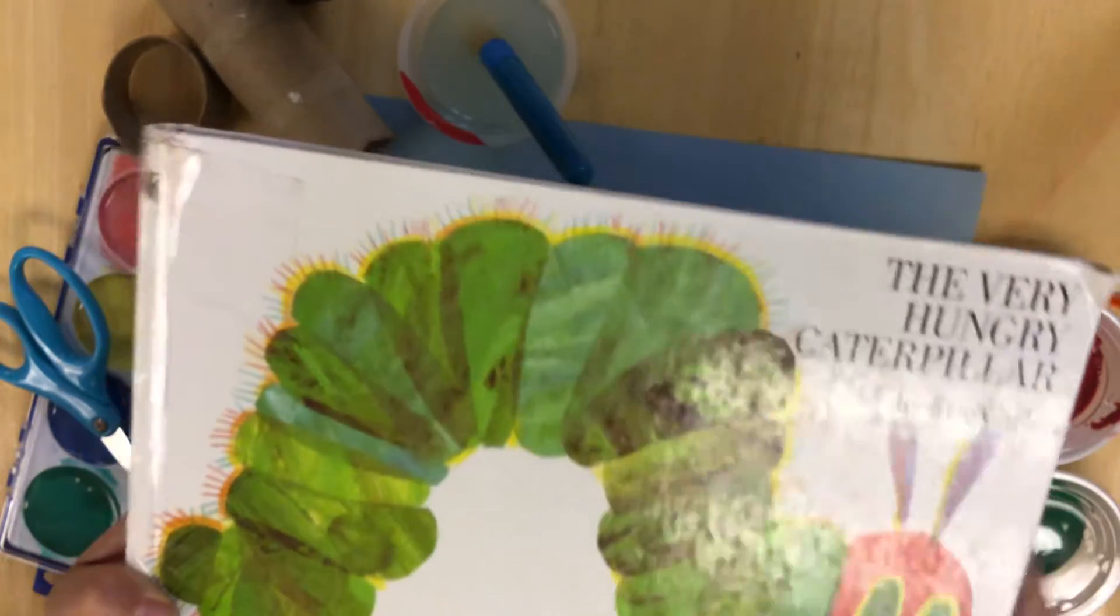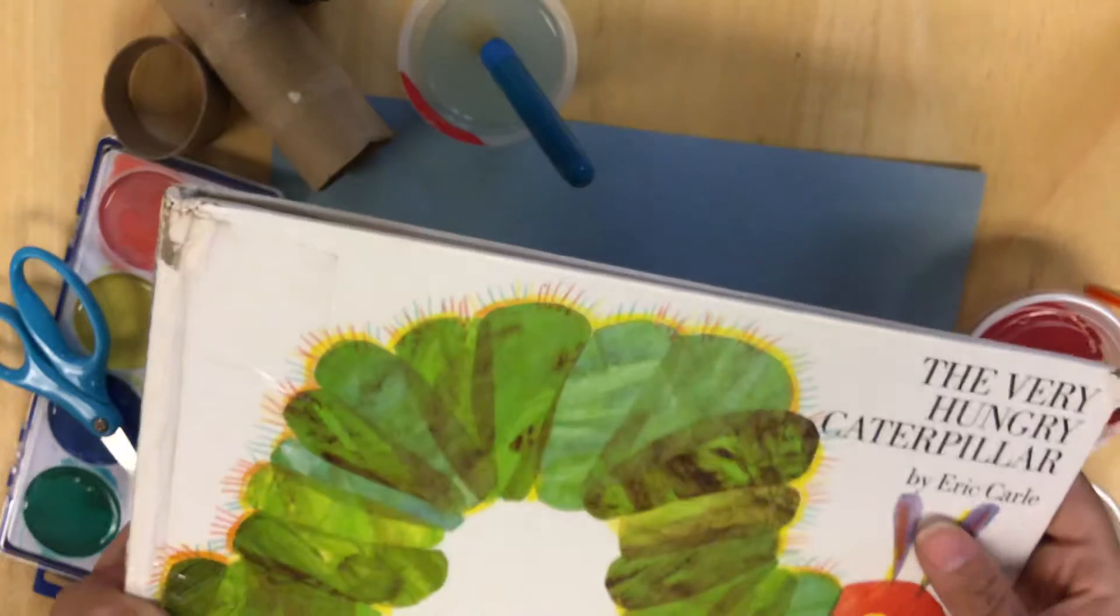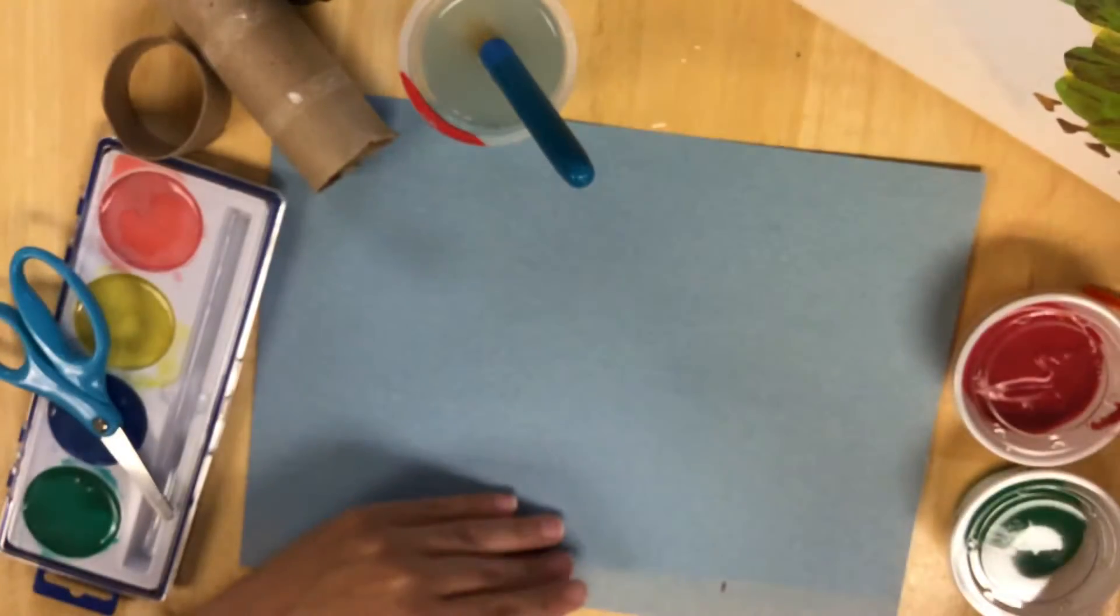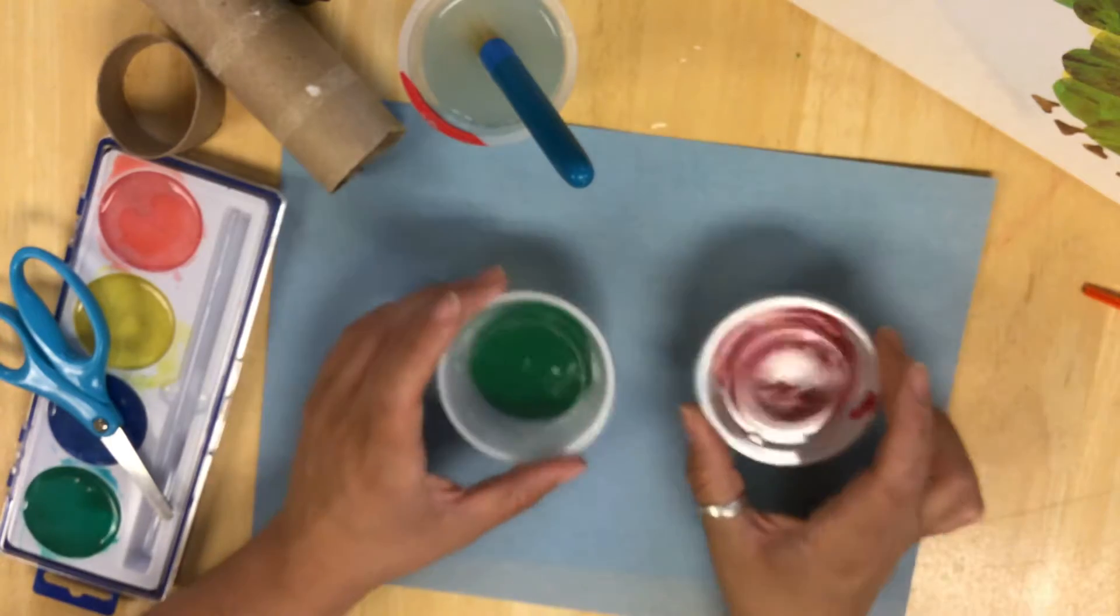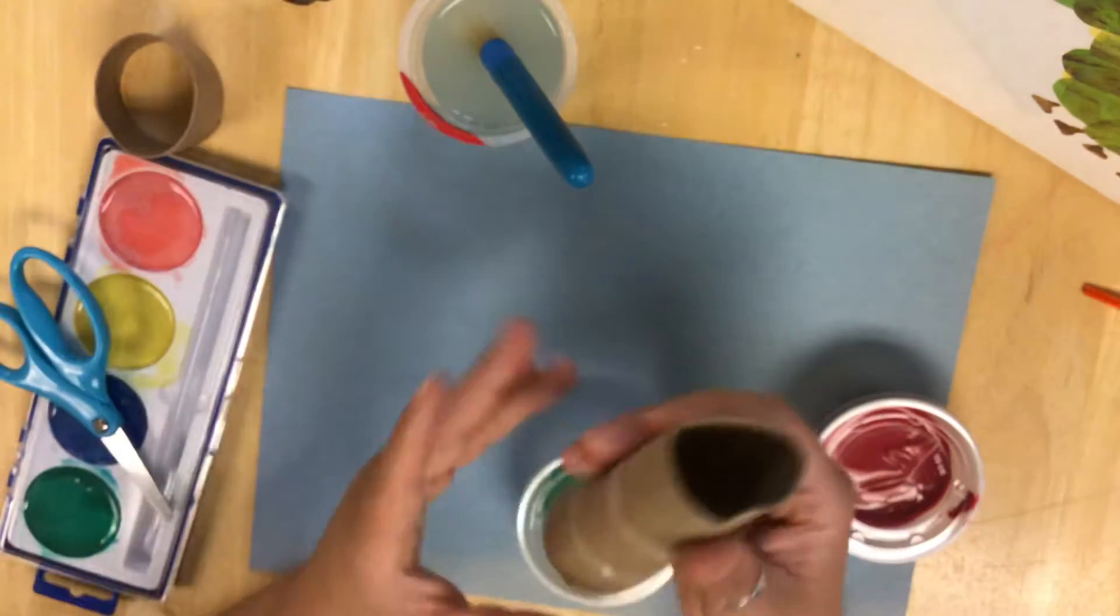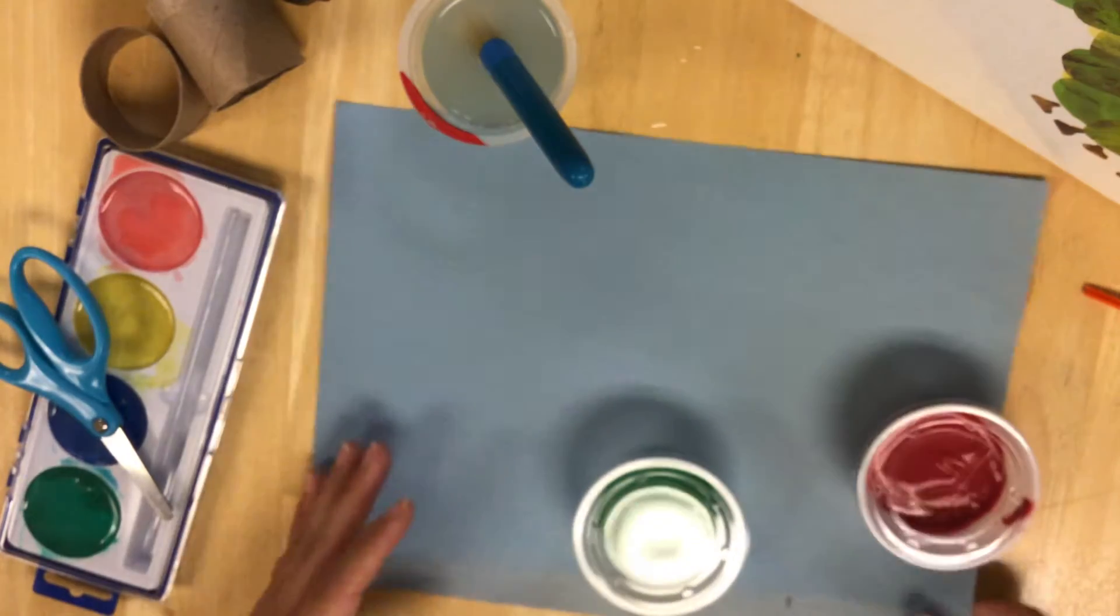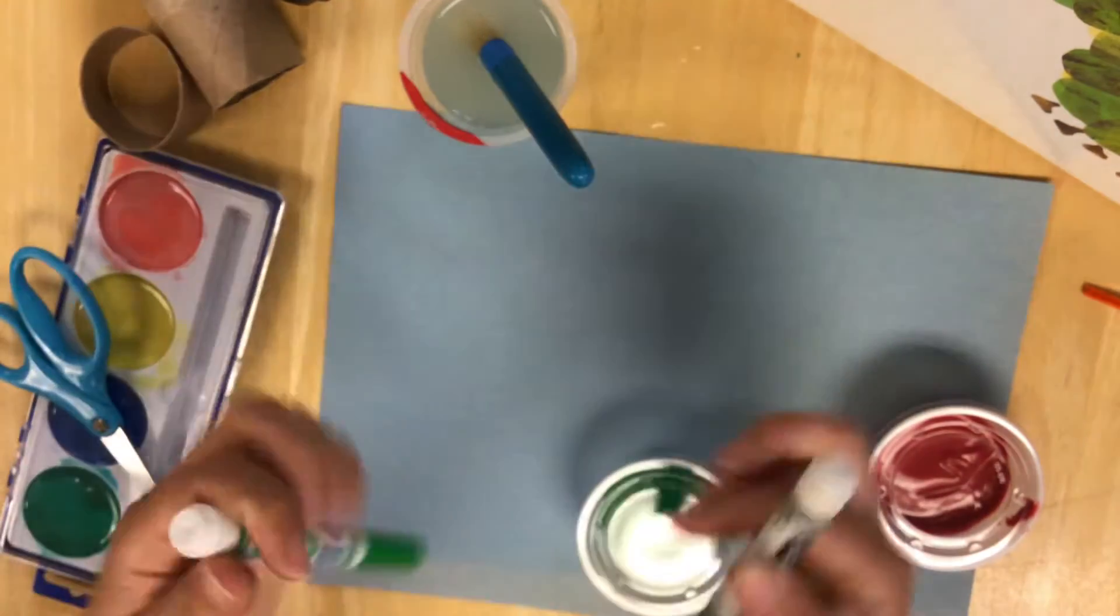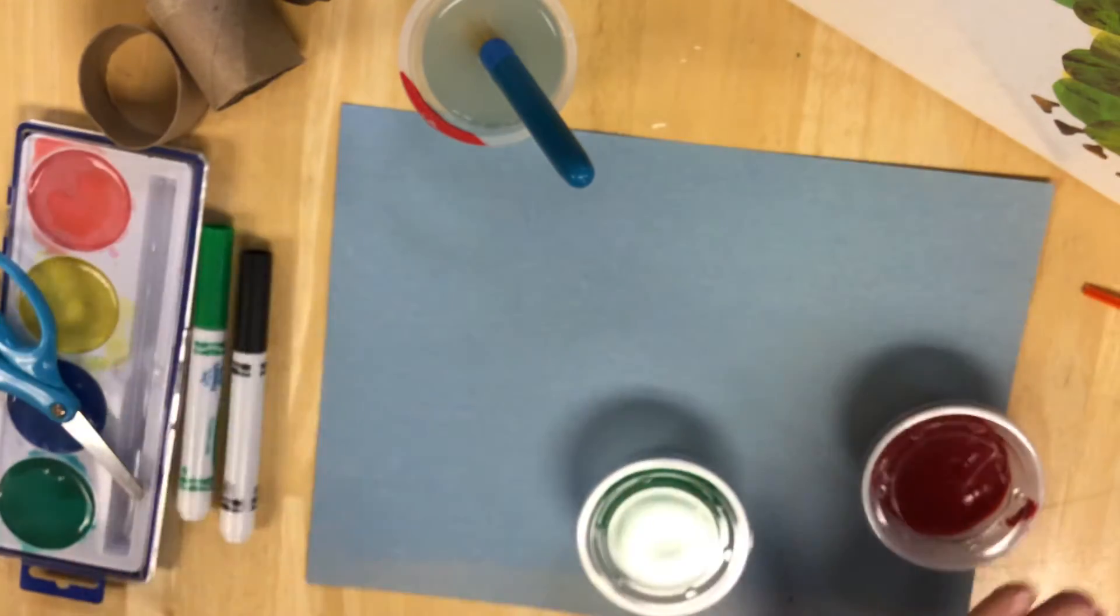So as this is The Very Hungry Caterpillar, we're gonna be doing some caterpillar and butterfly activities this week. So in your materials bag you should have gotten a cup of red paint, red paint and green paint, as well as a toilet paper tube and a piece of paper. You might also want to have some markers on hand or some paintbrushes to use with this.